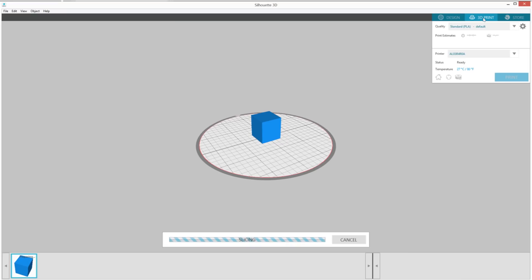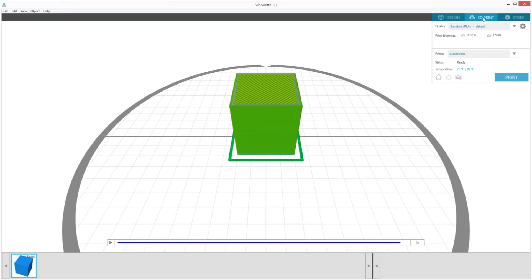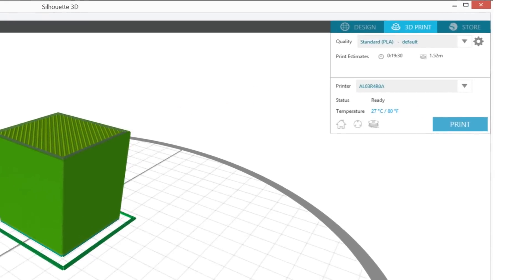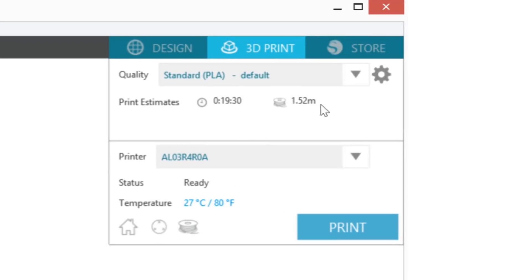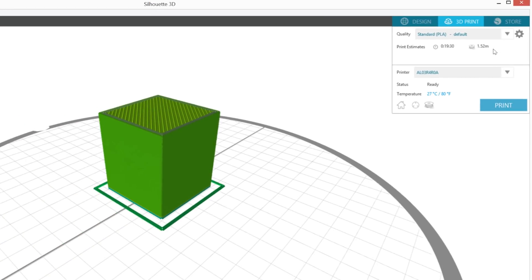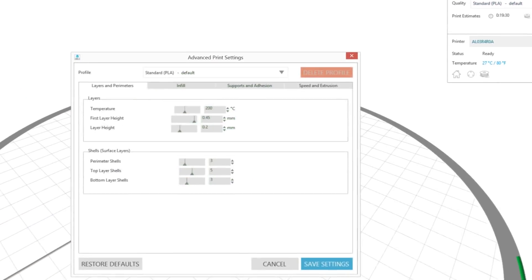Next, go to the 3D Print tab. The Silhouette 3D software will automatically start slicing your design according to the standard print profile. In the upper right-hand corner there is a drop-down menu where you can select the quality of the print. You can select one of the default print profile settings: Draft, Standard, and High Quality, or you can make your own print profiles by clicking on the gear button to the right to adjust the settings.